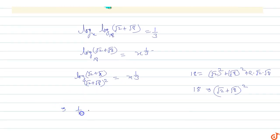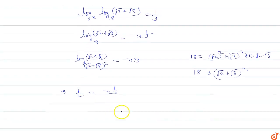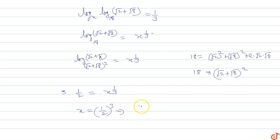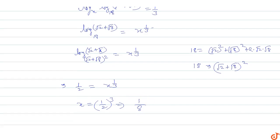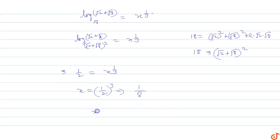So √2 + √8 = √18, meaning 18^(1/2) equals x^(1/3). Now take cubes on both sides: x = (1/2)³, so x equals 1/8.